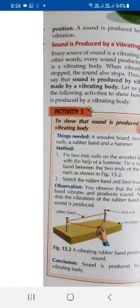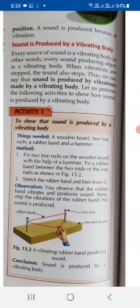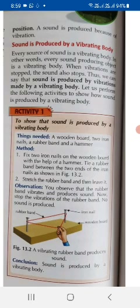We can say that sound is produced because of vibrations. Sound is produced by a vibrating body. Every source of sound is a vibrating body. In other words, every sound-producing object is a vibrating body. When vibrations are stopped, the sound also stops.